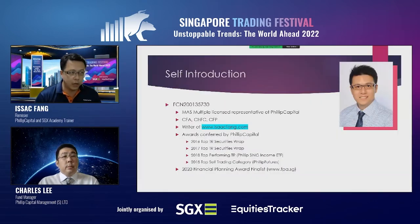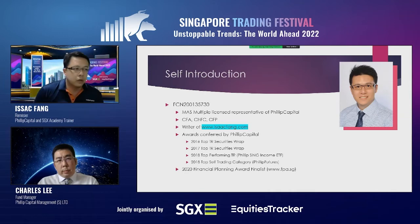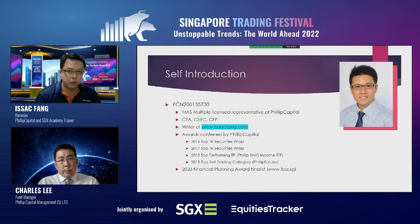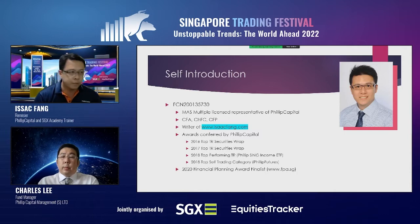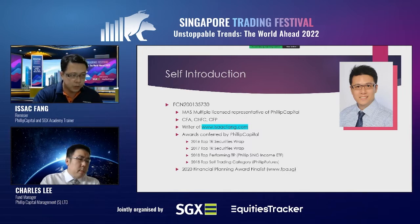A little bit about myself: I do have a representative license number and I'm multi-licensed, a representative of Philip Capital. I have the CFA, ChFC, and CFP designations. I have my own website — IsaacFung.com — where I'll make this deck of slides public in due time. I've won some awards before; I'm more focused on securities representation rather than unit trust.